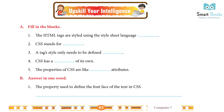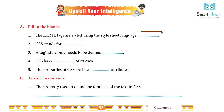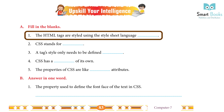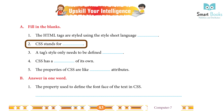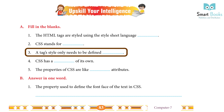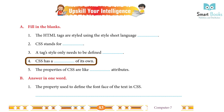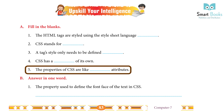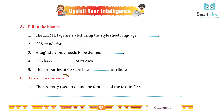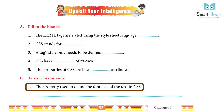Upscale your intelligence. Fill in the blanks: 1. The HTML tags are styled using the style sheet language — Answer: CSS. 2. CSS stands for — Answer: Cascading Style Sheet. 3. A tag's style only needs to be defined — Answer: once. 4. CSS has a — of its own — Answer: syntax. 5. The properties of CSS are like — attributes — Answer: HTML.